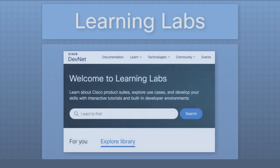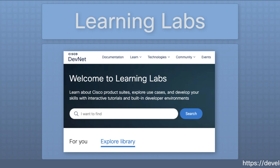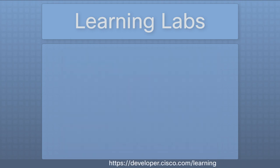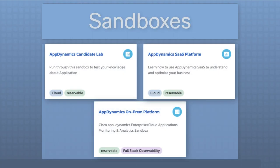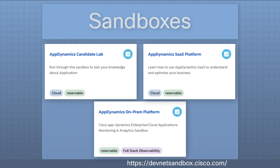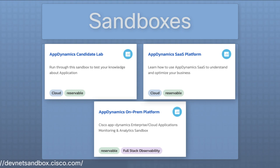Learning Labs: Be sure to check out the free Learning Labs from Cisco DevNet. Just visit the URL below and click on Explore Library, then select AppDynamics from the menu on the left. Some of the Learning Labs make use of the free DevNet Sandboxes, which you can reserve as well. Currently, there are three AppDynamics-related sandboxes in the catalog.